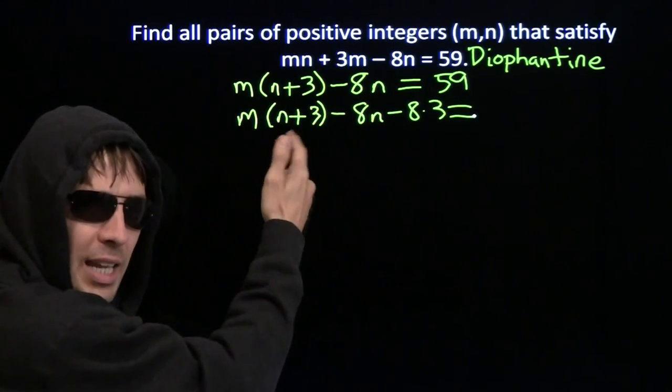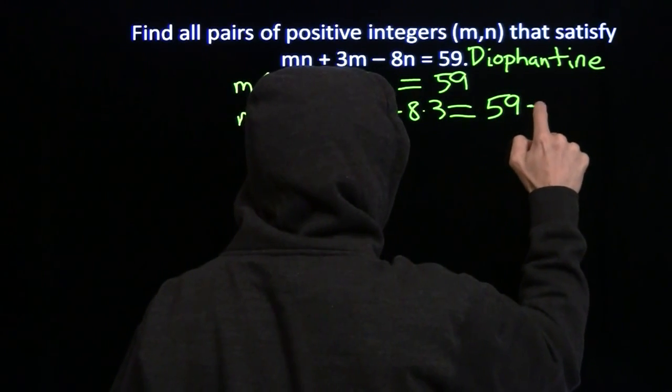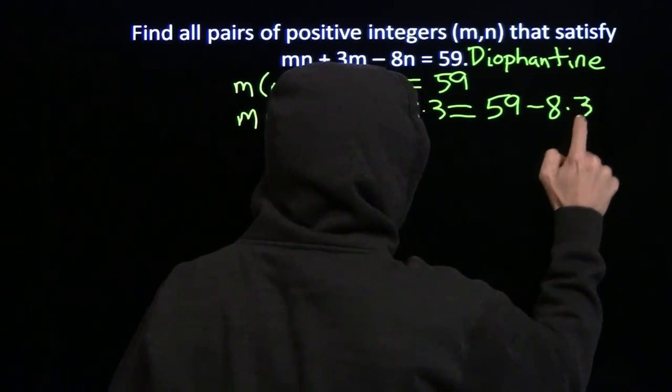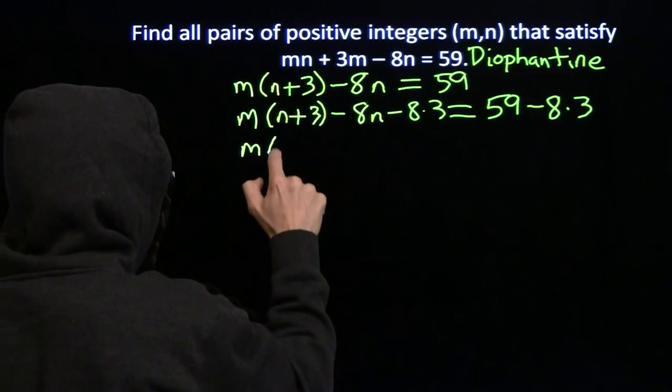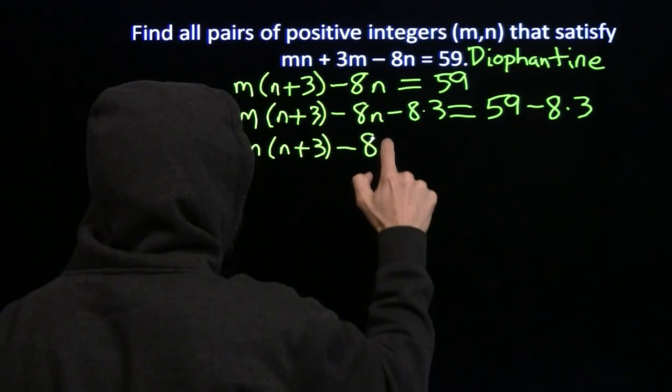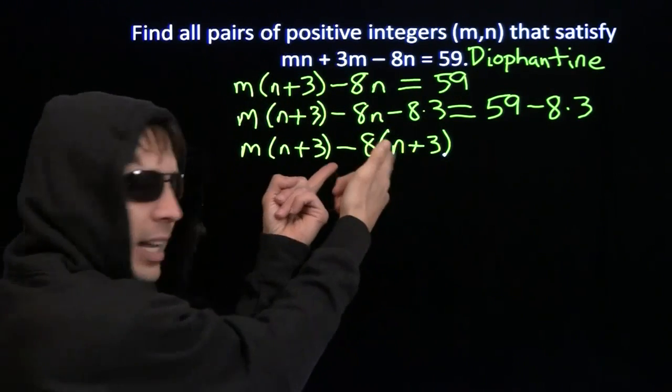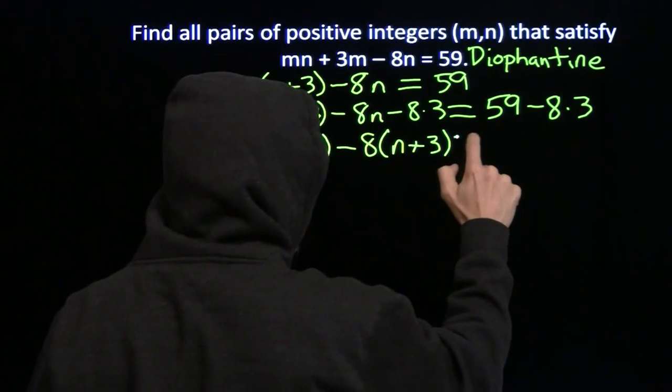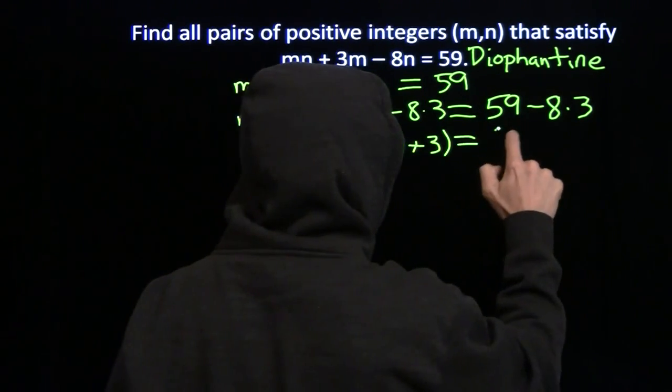Now, if I subtract 8 times 3 on the left side, can't play favorites, got to subtract it on the right side as well. And now over here, I can factor out that minus 8 and check out what we have. We factor out the minus 8, and we've made our wishes come true. We've got that minus 8 times (n + 3). Over here, 59 minus 24 is 35.